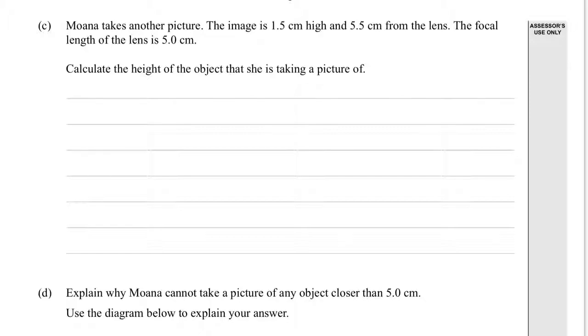Moana takes another picture. The image is 1.5 cm high, so height of the image equals 1.5 cm, and it's 5.5 cm from the lens, so that's the distance of the image being 5.5 cm. The focal length of the lens f is 5.0 cm.